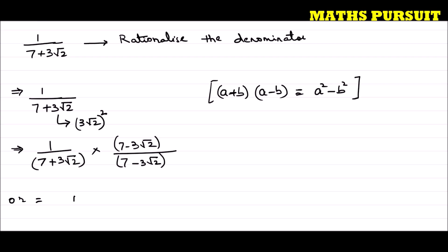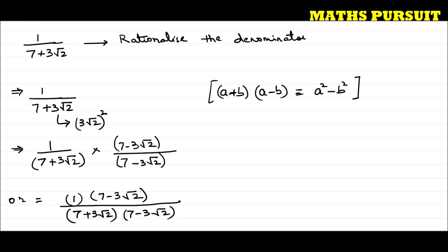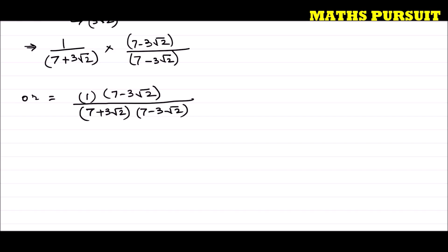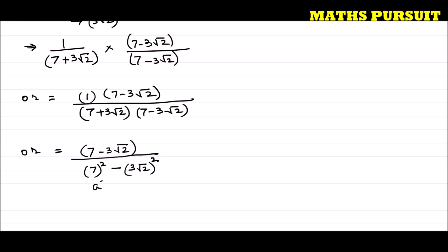So this gives us: 1 upon 7 plus 3 root 2, multiplied by (7 minus 3 root 2) over (7 minus 3 root 2). This is equal to 1 into (7 minus 3 root 2) in the numerator, over (7 plus 3 root 2) into (7 minus 3 root 2) in the denominator. That is a plus b into a minus b, which is nothing but a² minus b². Here a is 7, so we get 7 squared, and b is 3 root 2, so we get (3 root 2) squared.